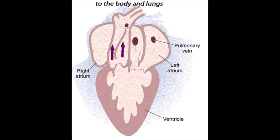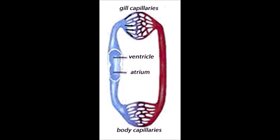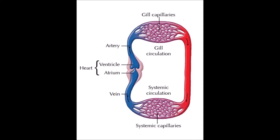In fish, the heart is two-chambered with one auricle and one ventricle. The heart pumps deoxygenated blood to the gills for oxygenation. Oxygenated blood from the gills is supplied to body parts, where oxygen is used and carbon dioxide makes it deoxygenated again. This deoxygenated blood re-enters the heart and is pumped to the gills. Since blood passes through the heart only once per cycle, fish have single circulation.